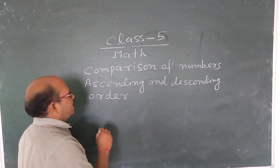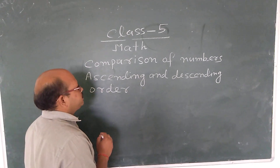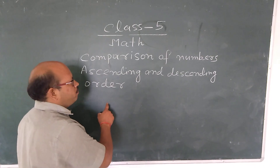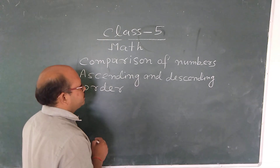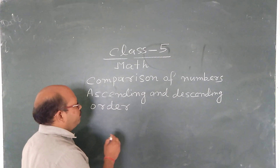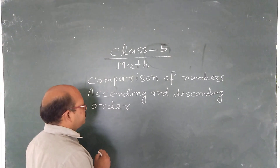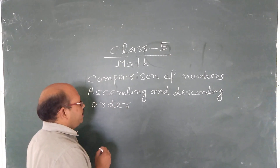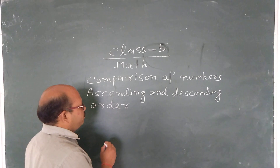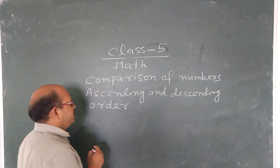In ascending and descending order, first the comparison of numbers — we find which number is greater and which number is less.